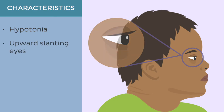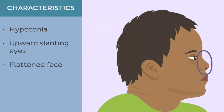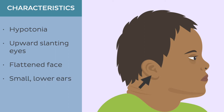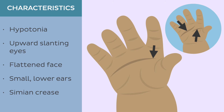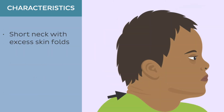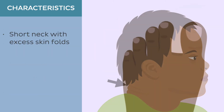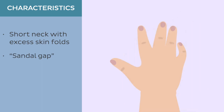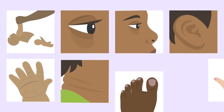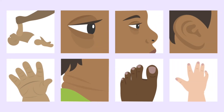Other common features include upward slanting eyes; a flattened face, particularly in the nose and mid-face area; small ears typically set lower on the head; a single crease across the palm called transverse palmar crease, or simian crease, instead of the usual two; a short neck with excess skin folds; a wide gap between the first and second toes, also known as sandal gap; and an inward curvature of the pinky finger known as fifth finger clinodactyly. Not all newborns with Down syndrome will exhibit all of these features, but most will have one or a few.